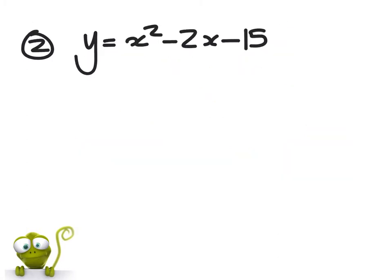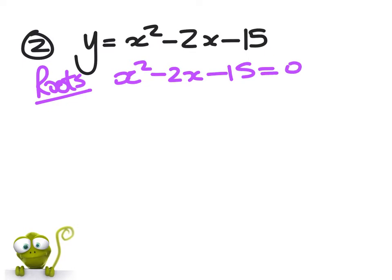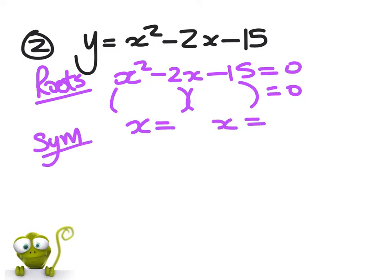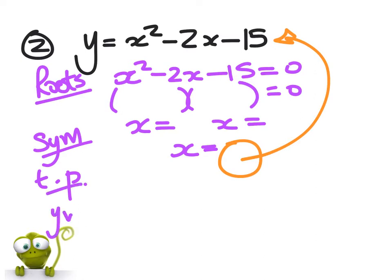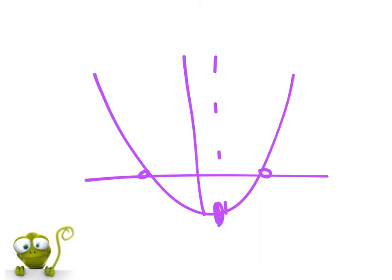Question two: sketch this curve. We go through the procedures. The roots: x squared minus 2x minus 15 equals zero, so we're going to factorize—that's going to give us some x numbers. Then we get the line of symmetry, which is halfway between these. Then we get the turning point. How do we get the turning point? We simply substitute this value from the line of symmetry back into the start. The last thing we need is the y-intercept, which comes from the number at the end. Once we've got all that information, we put it all on the graph.